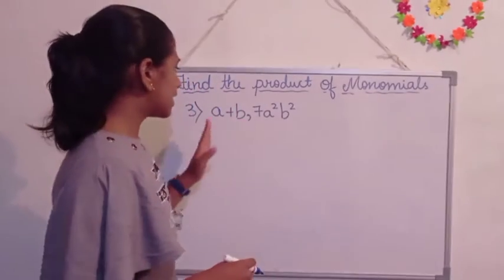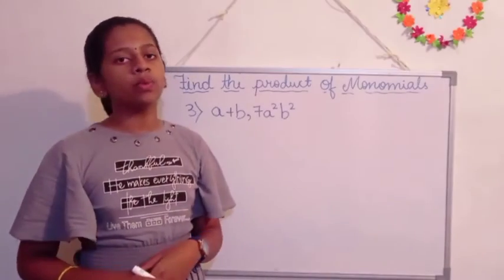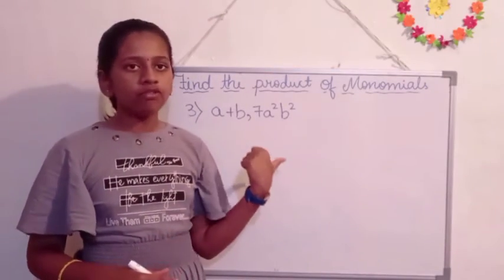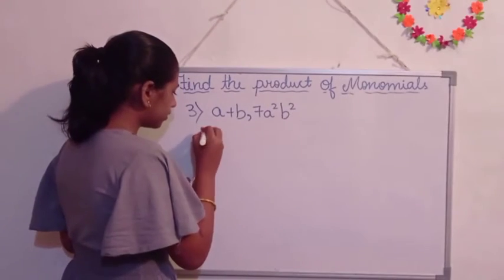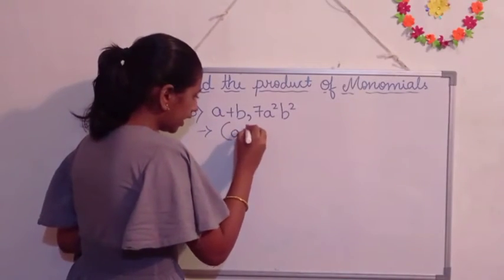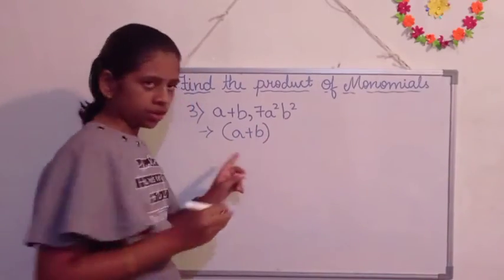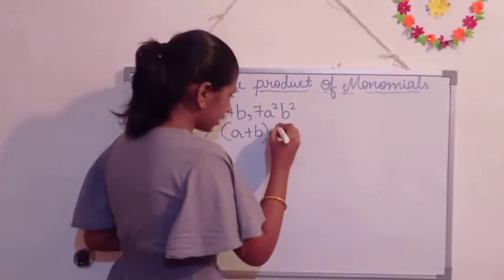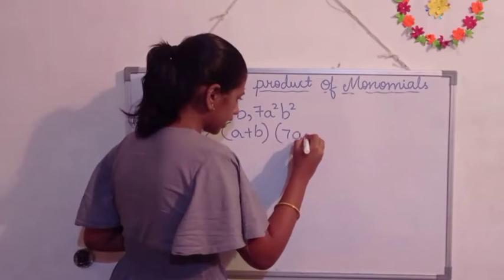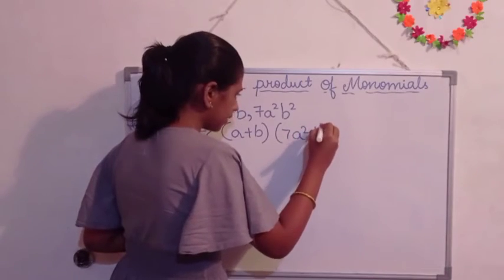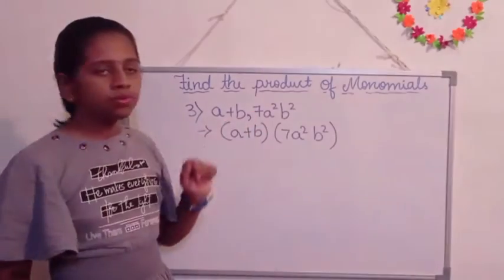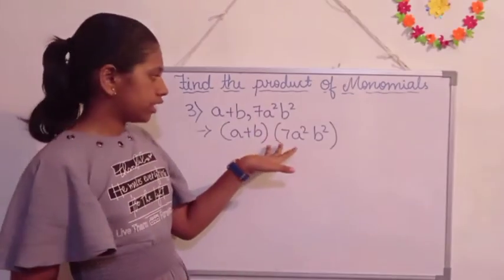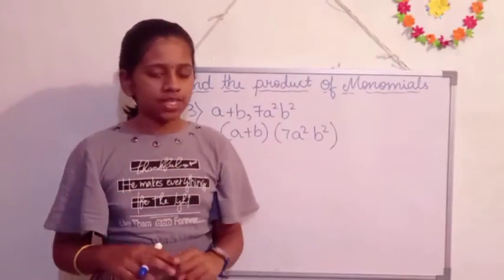So here is the third question, that is A plus B and 7A square B square. Now we are going to find the product of this monomial. So first we are going to write A plus B as one group and the second group that is 7A square B square is the second group, because there are two terms. Now we are going to divide them as the two groups.